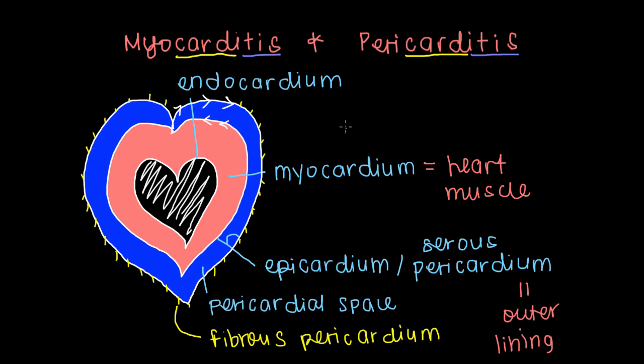So now we have an idea of why it's so troublesome to have myocarditis or pericarditis, and we've talked about the 'card' part of where they exist in our anatomy. But let's talk more about the '-itis' — let's talk about inflammation and what that means.